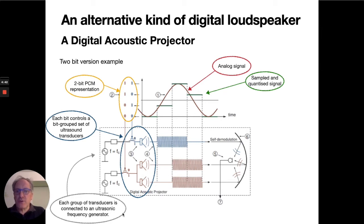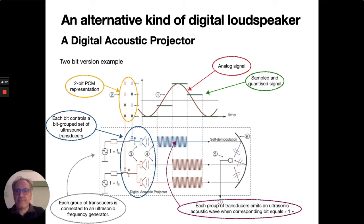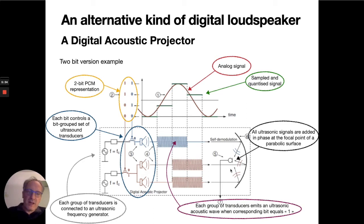Each group of transducers is connected to an ultrasonic frequency generator, which generates a high-level sinusoidal electrical signal at frequency fc. Each group emits an ultrasonic acoustic wave when the associated bit equals 1, and emits no signal when the bit is 0. The duration of this emission equals the sampling period. All transducer groups face a parabolic reflector so that the different acoustical signals add up in phase at the focal point, where a microphone picks up the resulting analog sound pressure signal.